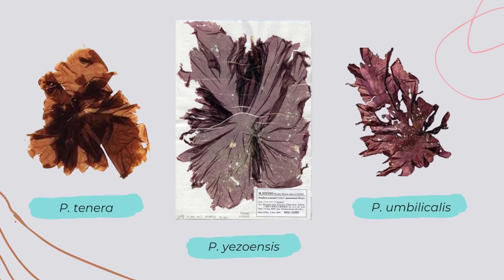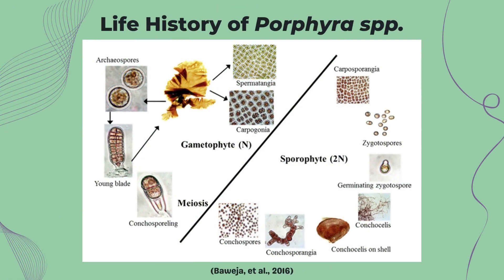Porphyra has nearly 133 species distributed all over the world. Some species under this genus include Porphyra tenera, Porphyra yezoensis, Porphyra umbilicalis, and other economically significant species like Porphyra haitanensis, Porphyra suborbicularis, Porphyra dentata, and Porphyra angusta. Moving on to the life history of Porphyra species, Porphyra has a heteromorphic life cycle with an alternation between a macroscopic foliose gametophytic phase and a filamentous sporophyte phase, as mentioned earlier.